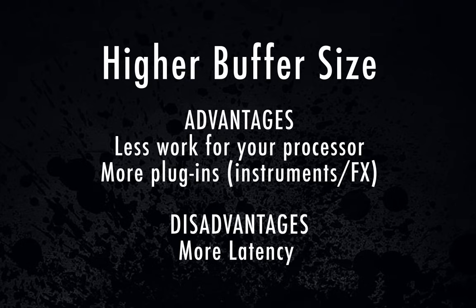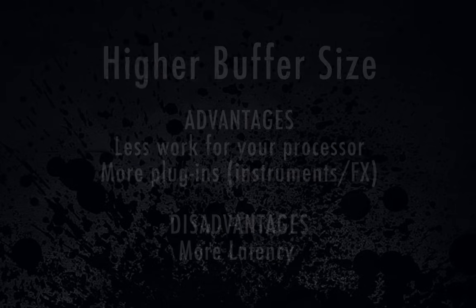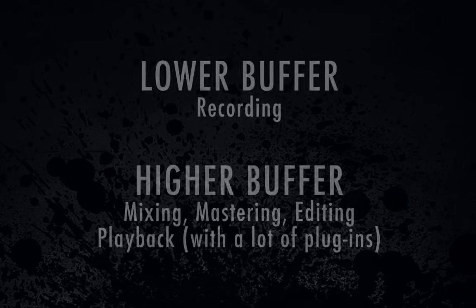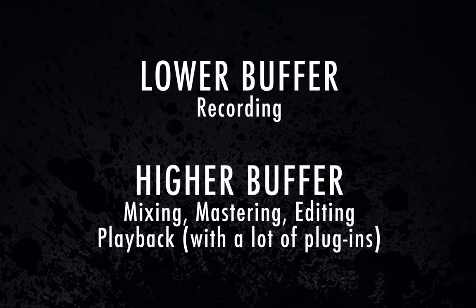The disadvantage of using a higher buffer is that it causes more latency issues, so you never want to use it for recording — your singer or player can feel like they're out of time with what they're monitoring versus the metronome. The advantage of a lower buffer size is that you're optimizing your latency, sometimes down to five or six milliseconds, so you always want to use a low buffer size for recording. The disadvantage is you can't use as many mix plugins simultaneously and it makes your processor work harder. You pretty much always want to use a lower buffer for recording and a higher buffer for mixing, mastering, or playing back audio with a lot of plugins.